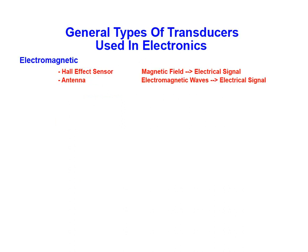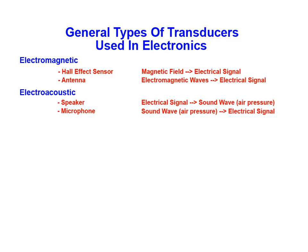Electromagnetic transducers convert magnetic field intensity or electromagnetic waves into electrical signals. Some examples are the Hall effect sensor and the antenna. Electro-acoustic transducers, such as speakers or microphones, convert electrical signals into sound waves or sound waves into electrical signals.